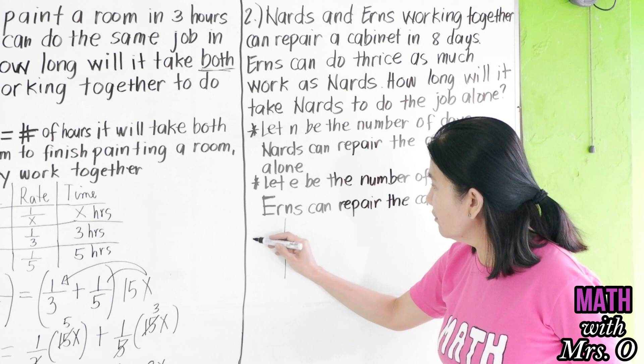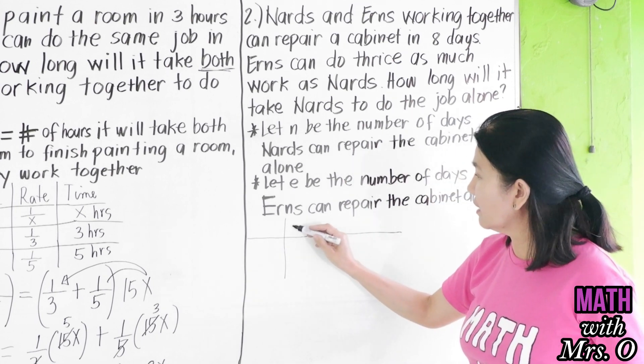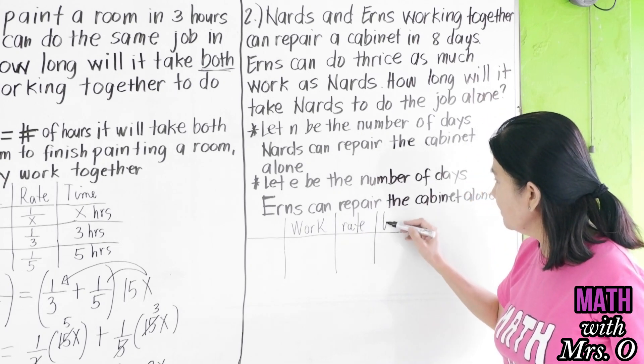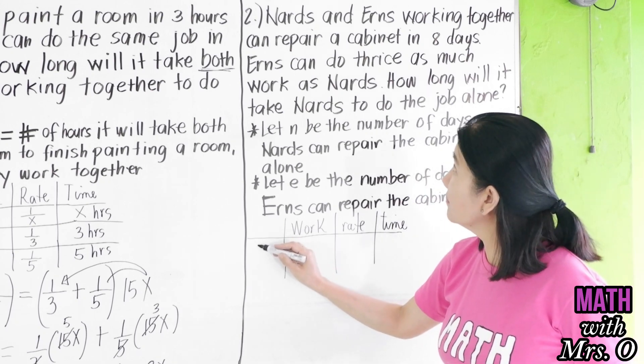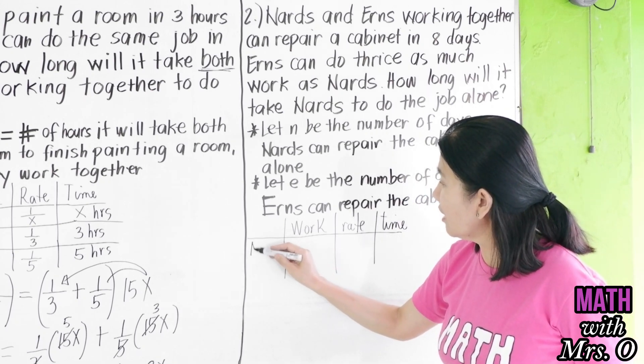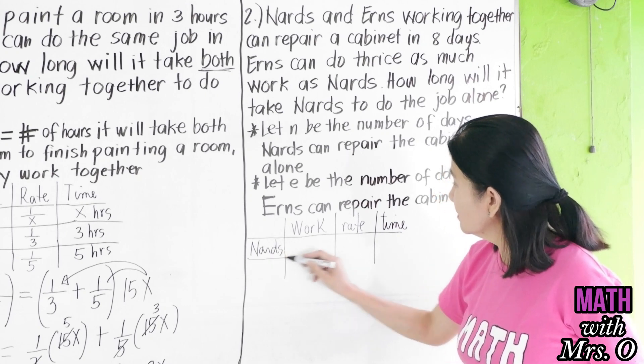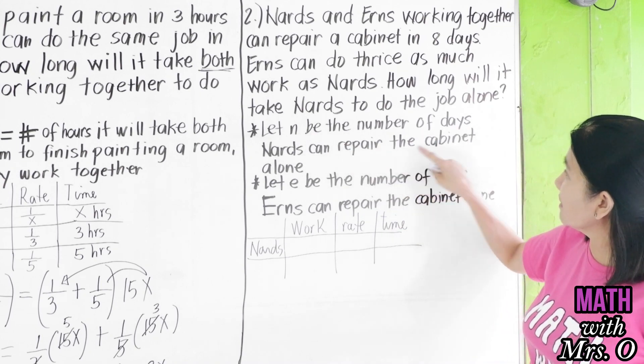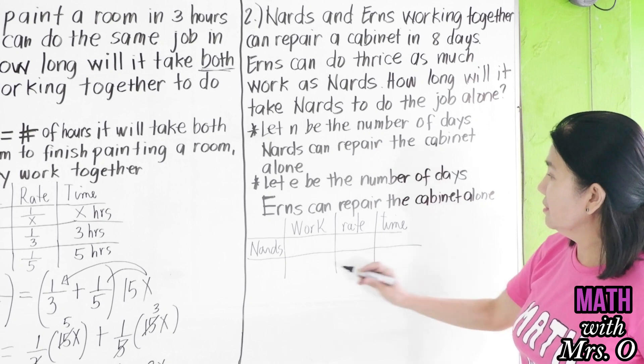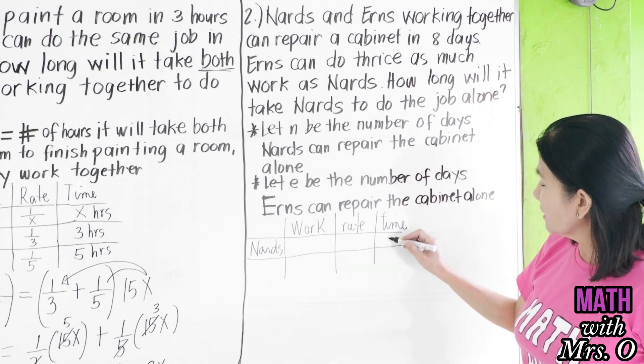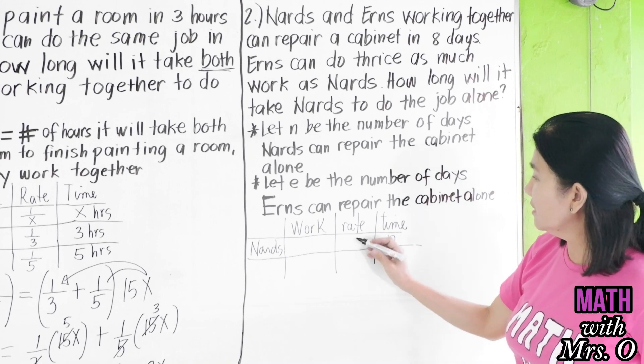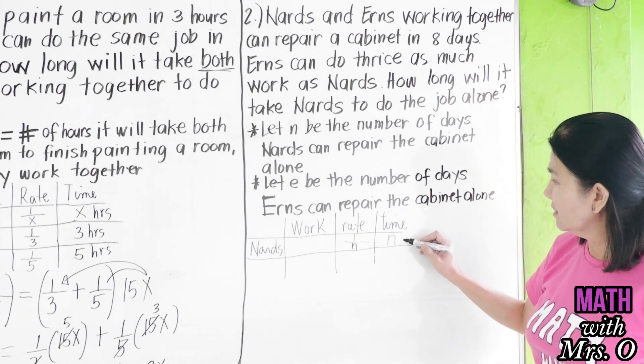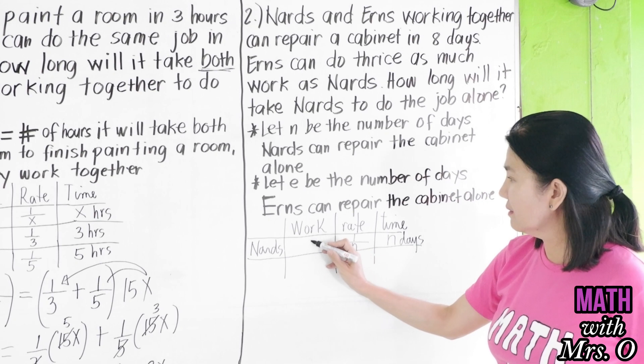Okay. So we let N be the number of days Nards can repair the cabinet alone. So, if you will have here a table again for the work done, the rate, and the time. For Nards, let's read this again. We let N be the number of days Nards can repair the cabinet alone. So, Nards, time is N. His rate is 1 over N. We need one work in N days.